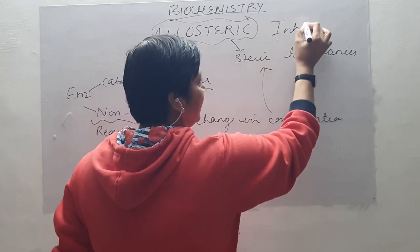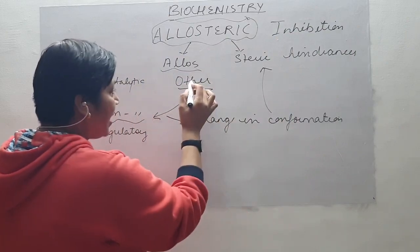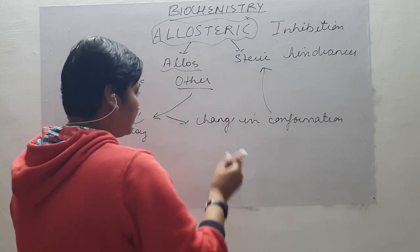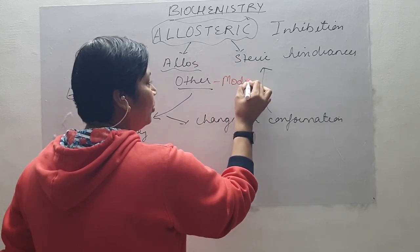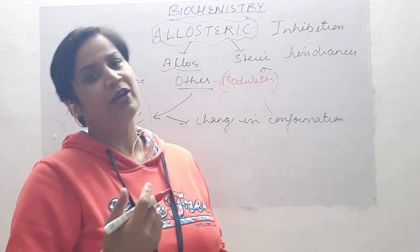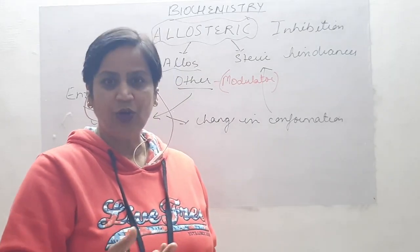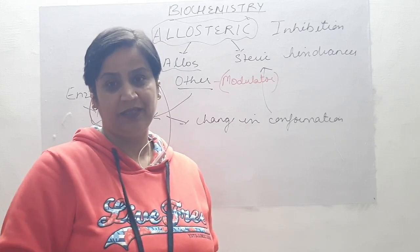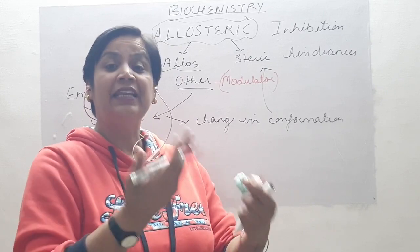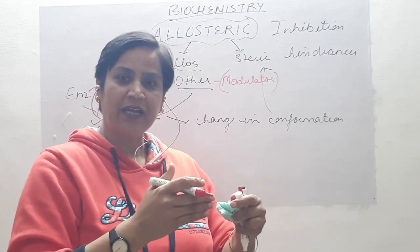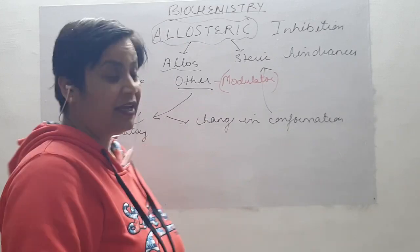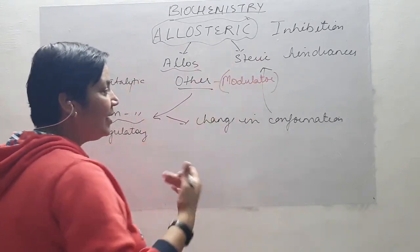The thing which binds is known as a modulator. Whether this modulator gives a positive or negative effect depends on the sequence of amino acids. If acidic and basic groups combine, there will be maximum cohesion and it will lead to an increase in enzyme activity. If two acidic groups combine, it will lead to repulsion and the enzyme activity can be decreased.